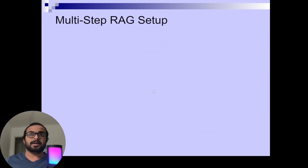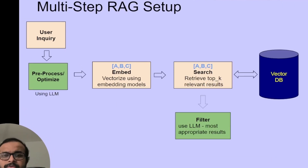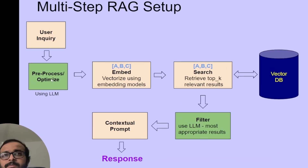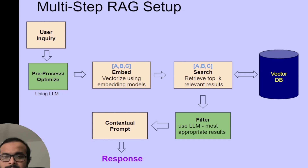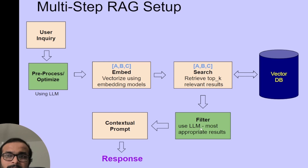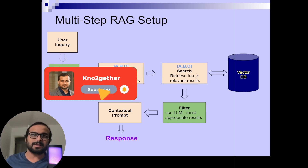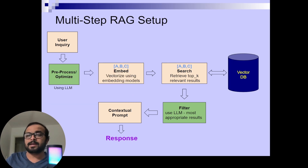Now let's take a look at multi-step RAG setup, which is similar to the basic RAG setup but introduces two additional steps. We take the user query and first do some optimization or pre-processing — for example, summarization of the user query using an LLM, or extracting the actual question to search the vector database. We then embed that optimized output and use it to search the vector database. When we get the results — say top K equal to 10 — we use another LLM to filter out the most appropriate results, pass them into the contextual prompt, and then use our LLM to generate the final response. This multi-step RAG pipeline will generate better output but may be a bit slower due to the several filtering steps using LLM.